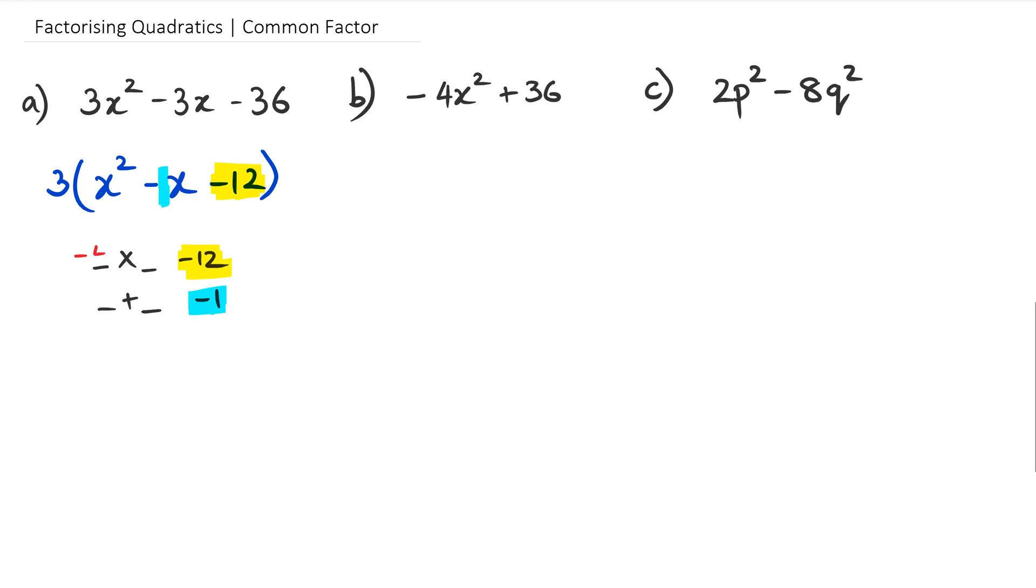So the two numbers are going to be negative 4 and positive 3, and negative 4 plus 3 equals negative 1. So our fully factorized equation for the first question would be 3 multiplied by x minus 4 multiplied by x plus 3.